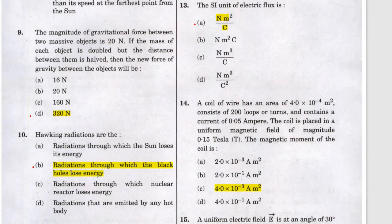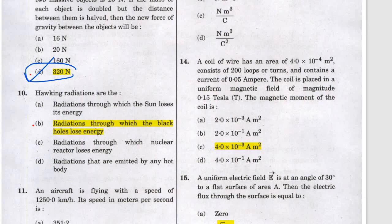Question nine answer is d, 322 newtons. Question ten is Hawking's radiation — this is the famous equation from Stephen Hawking. A black hole cannot radiate any energy, but Hawking first discovered that the black hole also emits radiation. This is one of the great discoveries of the 20th century, and through Hawking radiation the black hole can eventually evaporate.